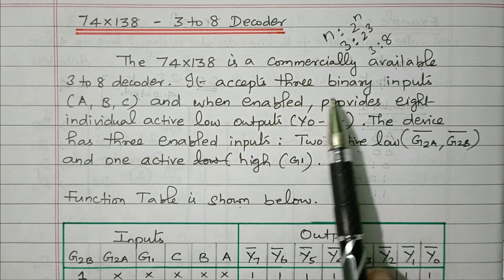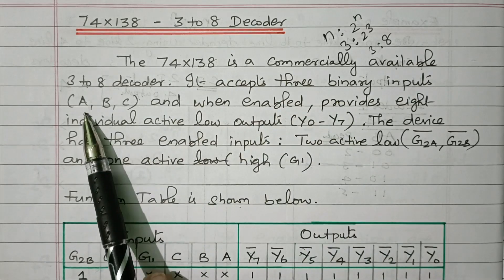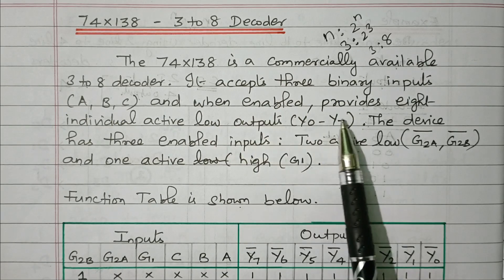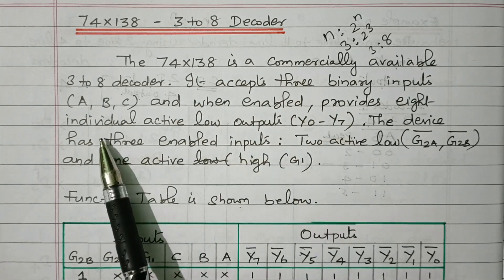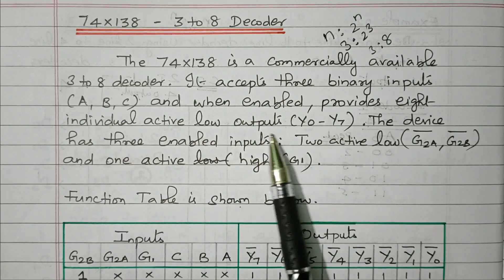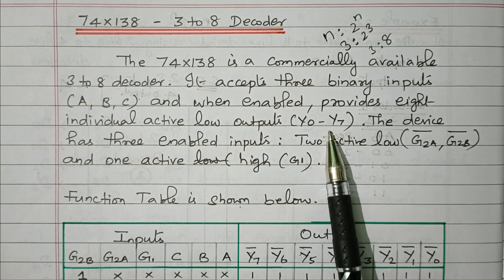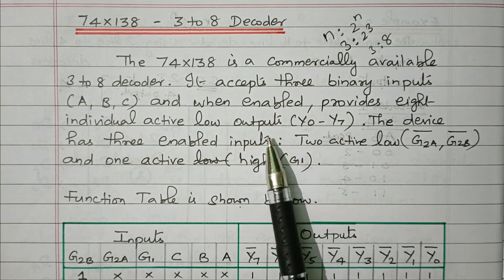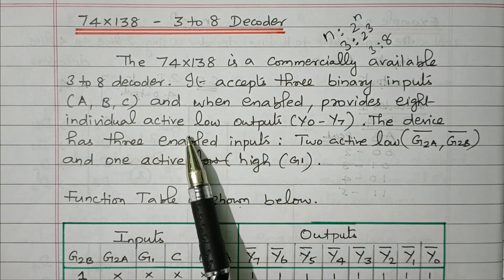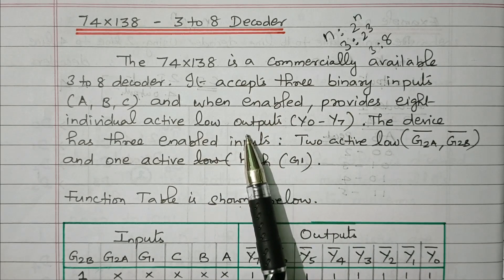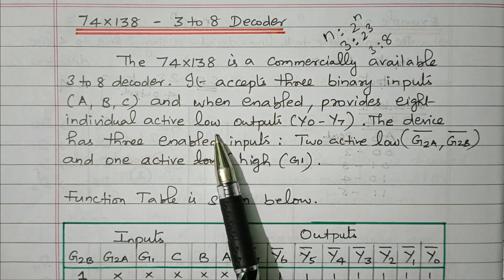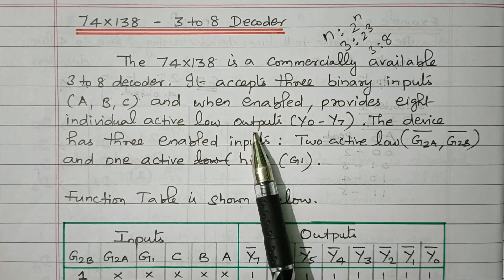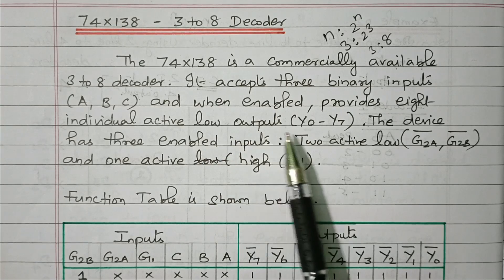It accepts 3 binary inputs — A, B, and C — and when enabled, provides individual active-low outputs Y0 to Y7. The output is inverted, so we are getting the low output. Normally we will get high output, but because of the inverter we get low output. Now we will see the pin diagram so we are able to understand.